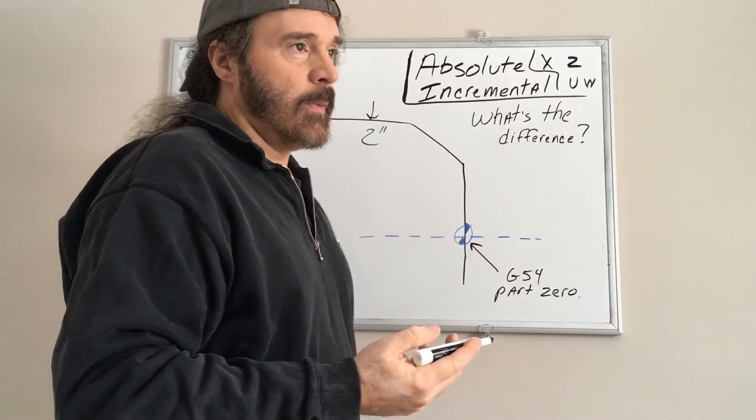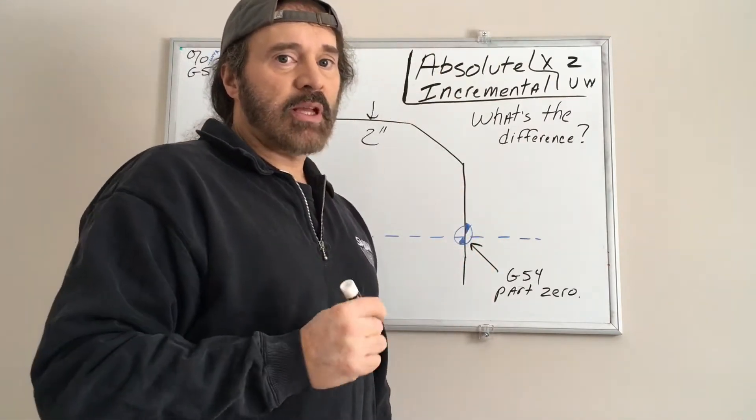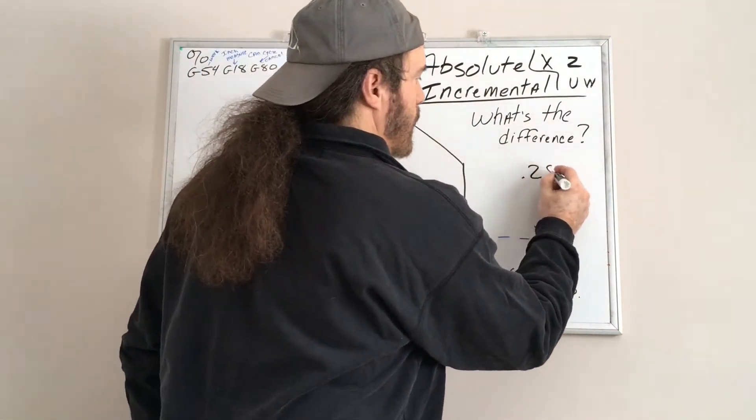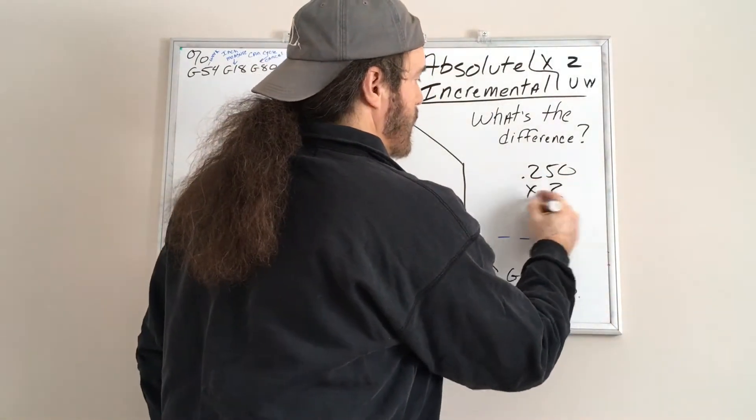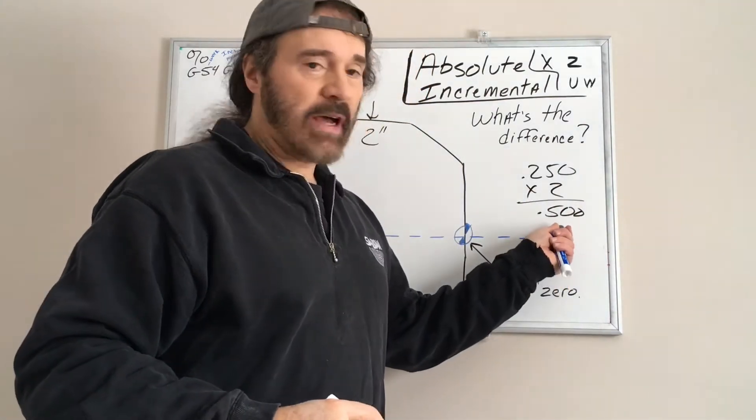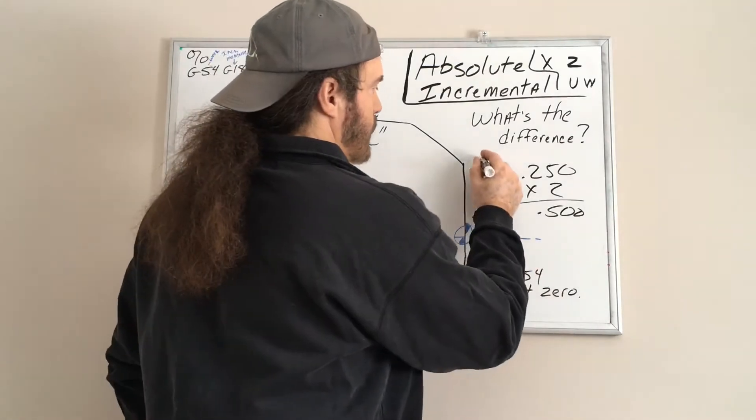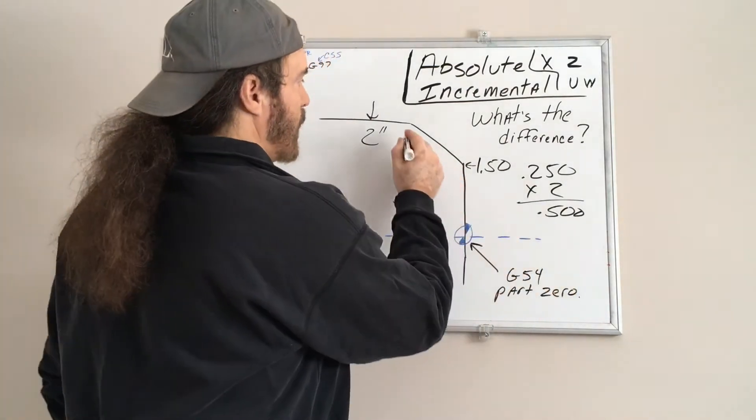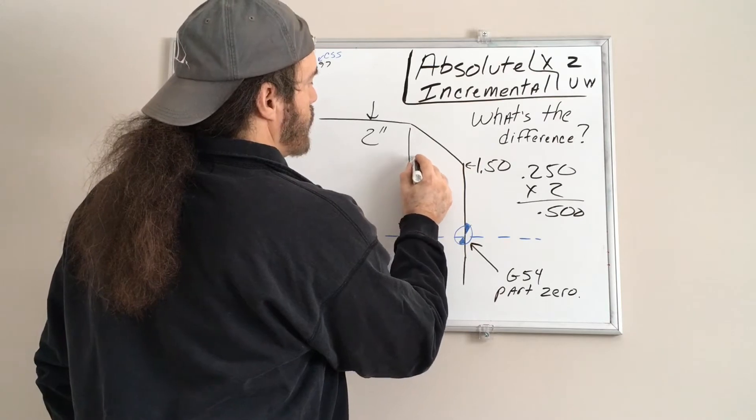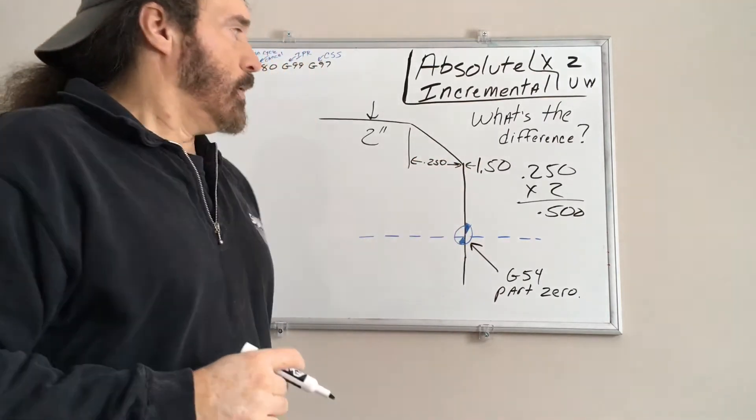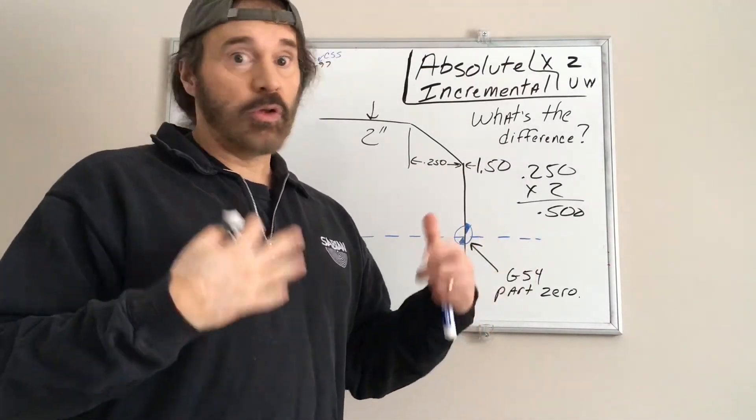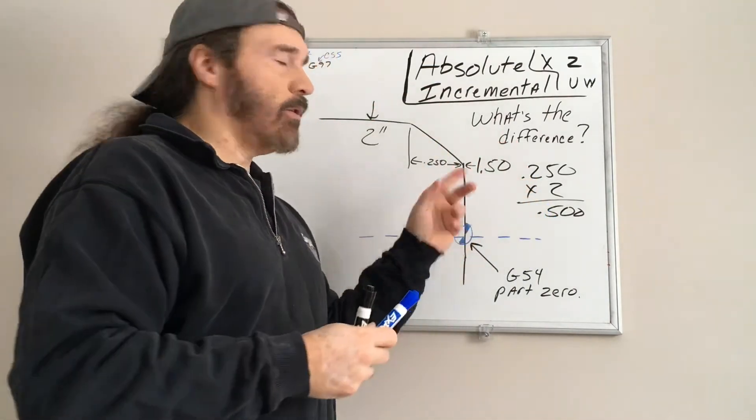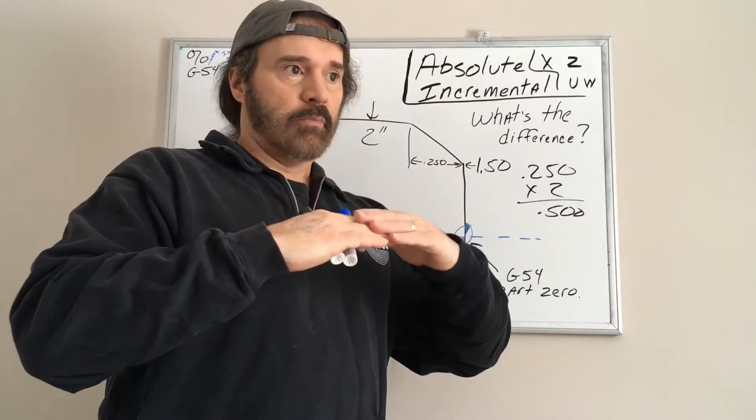You want to put a nice lead in, as far as maybe a quarter of an inch lead in. This surface here is going to be a G54 part zero. Whatever you set that up as, that's going to be your zero surface. If we're going to do a quarter inch lead in, we all remember in previous videos I explained on your X-axis everything is doubled, so quarter inch times two.